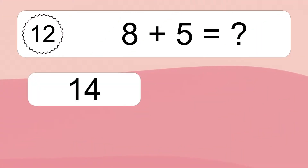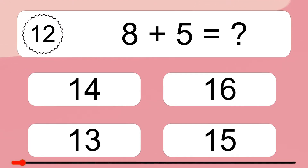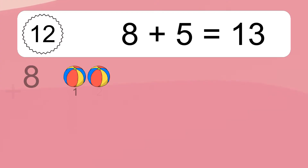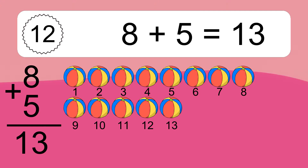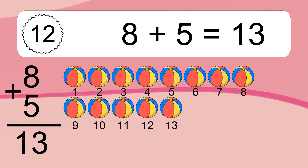Eight plus five equals what? Eight plus five equals thirteen. Let's count it: one, two, three, four, five, six, seven, eight, nine, ten, eleven, twelve, thirteen.